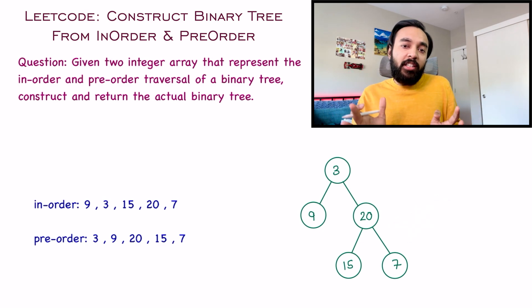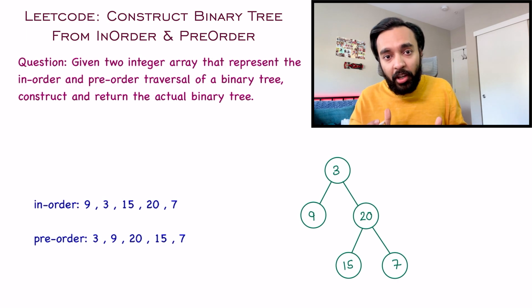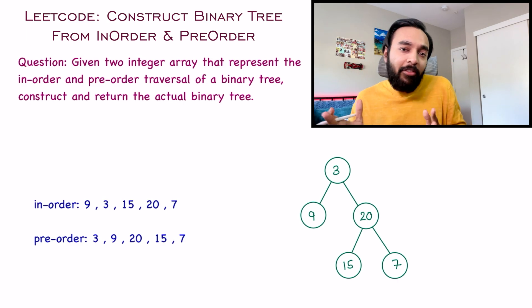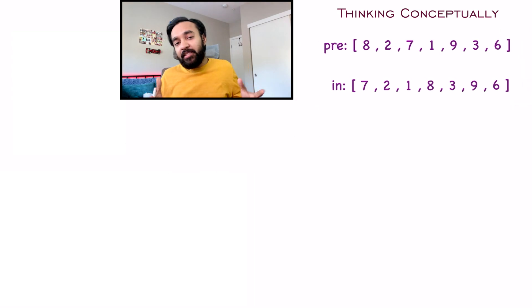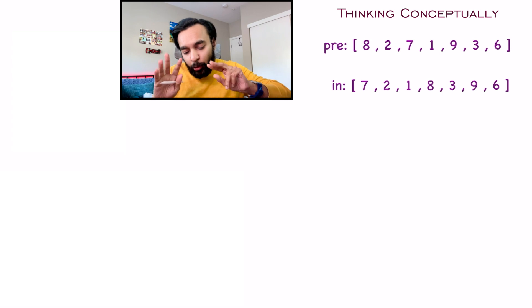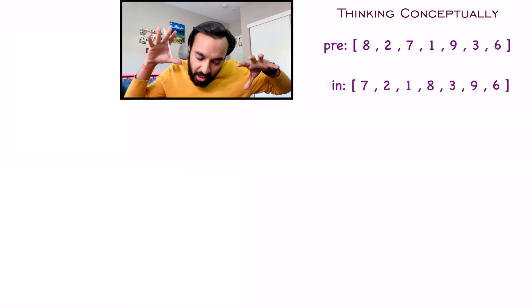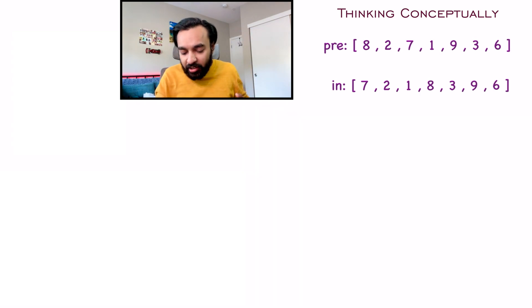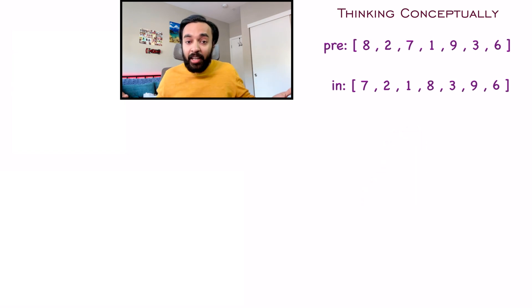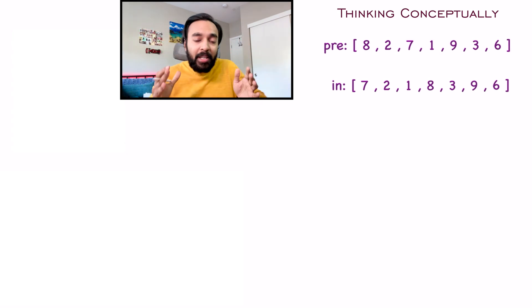If you feel you have understood the problem statement, feel free to stop the video and first try the problem once again on your own. Otherwise, let us dive into the solution. To understand things better, let us take a bigger test case. The most important or most difficult part of this problem is to understand where you even begin — you cannot just start creating any random tree. There will be so many different combinations and that will not give you any optimal result at all.